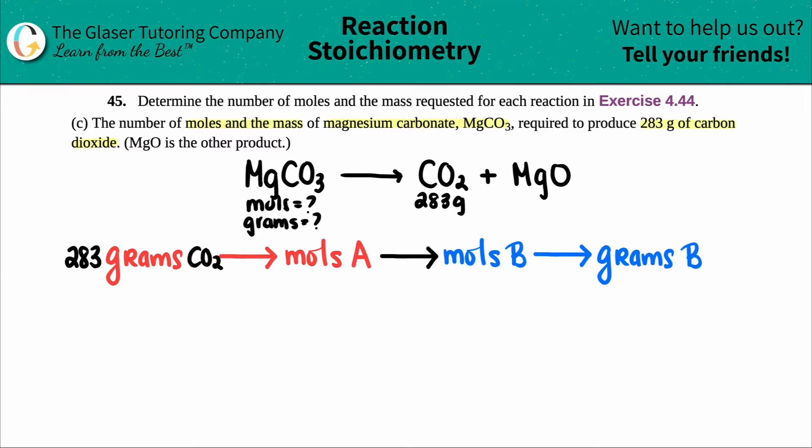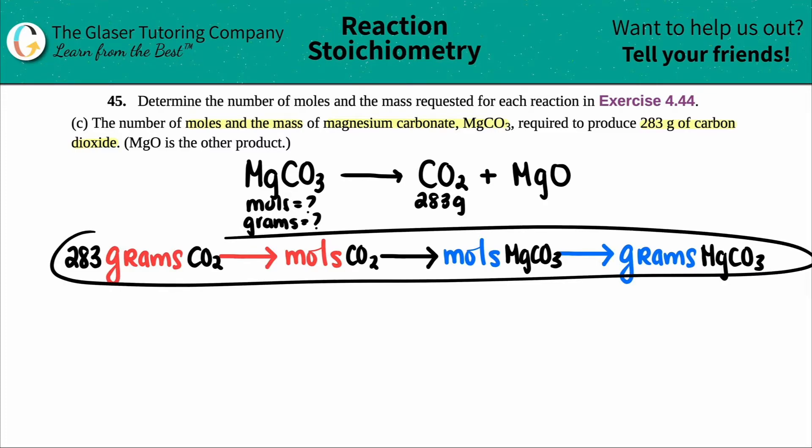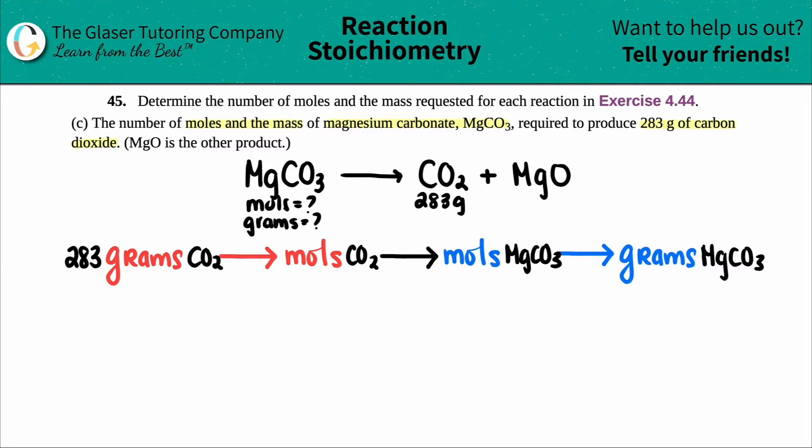Just remember, it's always grams to moles to grams. Grams to moles to moles to grams. And you convert at this stage when one compound goes to the other. In this case, they started us off with 283 grams of, not A anymore, specifically CO2. From there I can find out the moles of specifically CO2. Then from there, I'm going to convert into my moles of MgCO3 because that's the information they wanted from me. And then from there I can find out my grams of MgCO3.